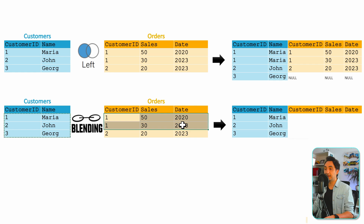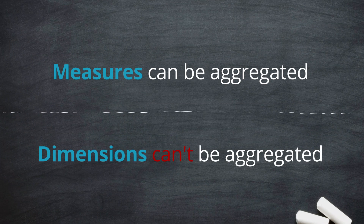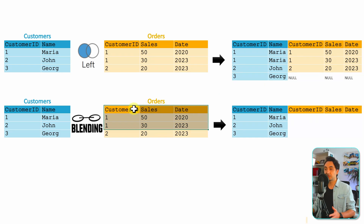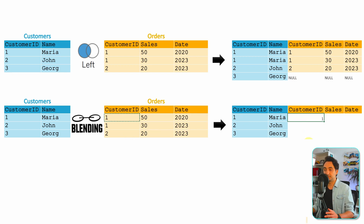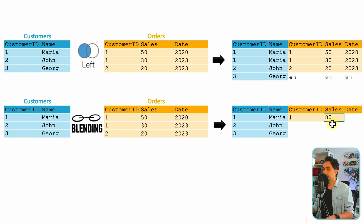Before fetching data from the secondary source, an aggregation happens first. For customer ID number one, which has two rows, those two rows are not passed directly to the output. It's important to understand that Tableau splits fields into dimensions and measures. Measures can be aggregated; dimensions cannot. Customer ID is a dimension, so Tableau writes the single value. Sales is a measure, so Tableau aggregates it first — the sum equals 80.